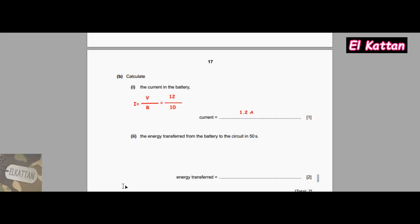For part (b)(ii), calculate the energy transferred from the battery to the circuit in 50 seconds using the formula E = I × V × t. I is the current, which is 1.2 amperes, times the voltage, which is 12 volts, times the time taken, which is 50 seconds, equals 720 joules.